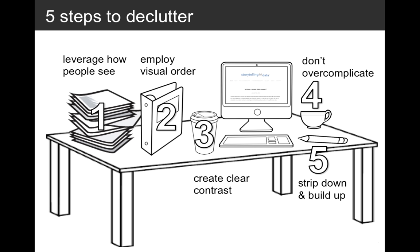We'll start off by talking about how people see, how we tend to visually organize information, and how we can take that into account when designing our data visualizations. In the second section, we'll talk about the importance of employing visual order in our designs. In the third section, we'll talk about creating clear contrast. In the fourth section, we'll discuss some risks in overcomplicating things. And finally, we'll look at a strategy where we strip down clutter and build up to tell a story to our audience. So let's jump right in and start off with a lesson on how people see.